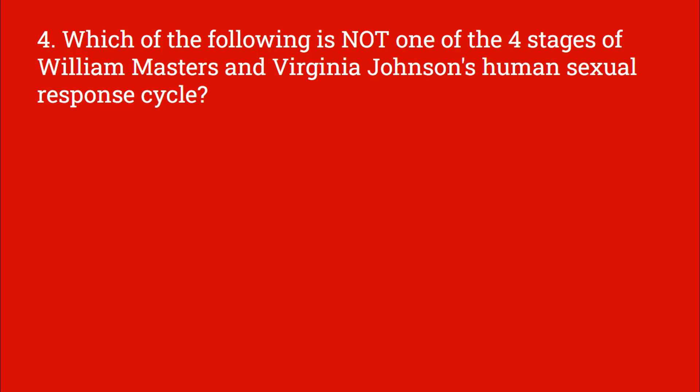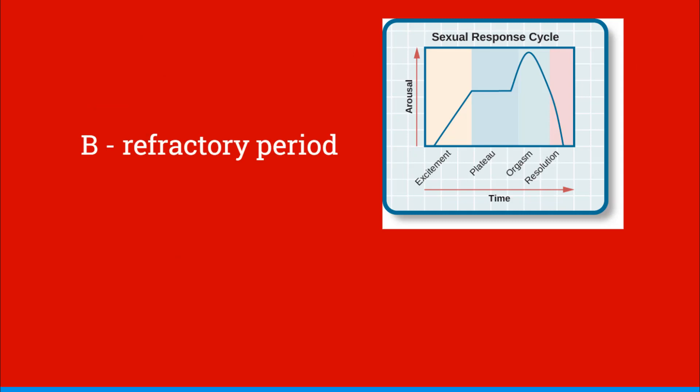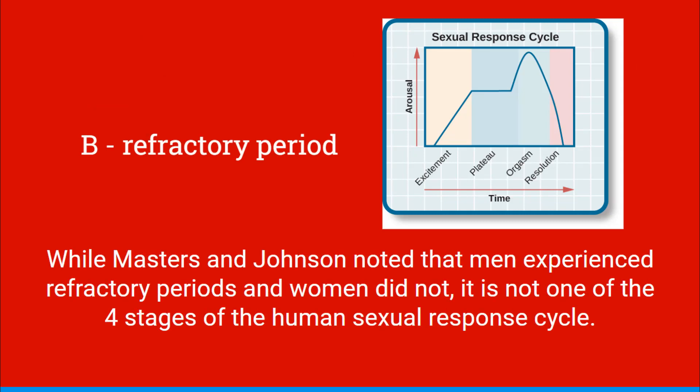Which of the following is not one of the four stages of William Masters and Virginia Johnson's human sexual response cycle? Excitement, refractory period, orgasm, resolution, or plateau. And this would be B, refractory period. While Masters and Johnson noted that men experienced refractory periods and women did not, it is not one of the four stages of the human sexual response cycle.